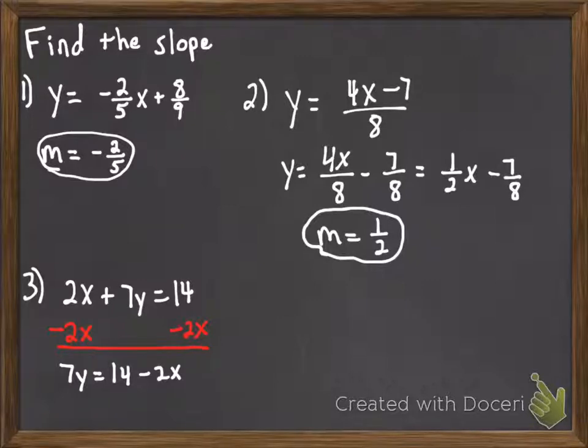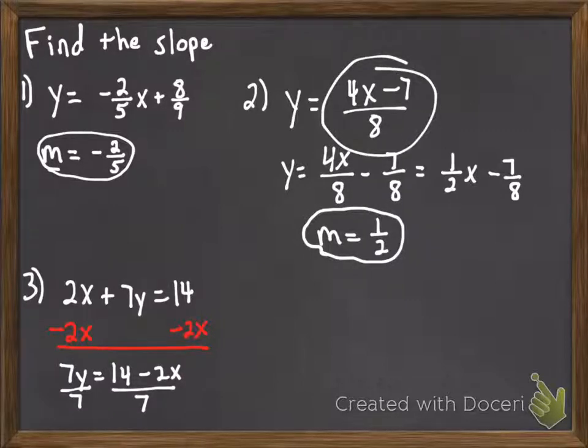And then to get y by itself, we need to divide both sides by 7. At this point, the equation is in the same format as this equation from before.